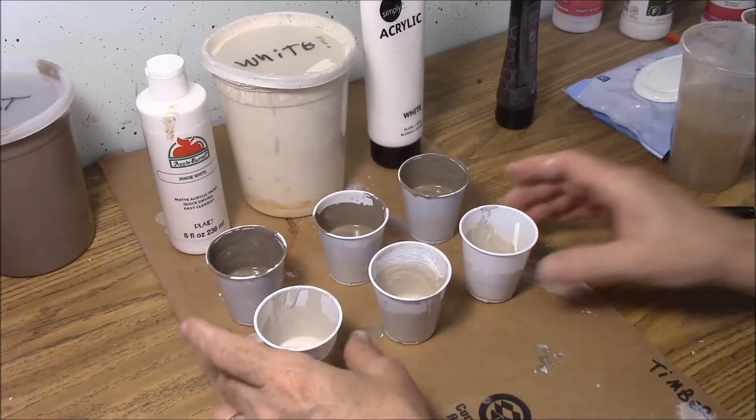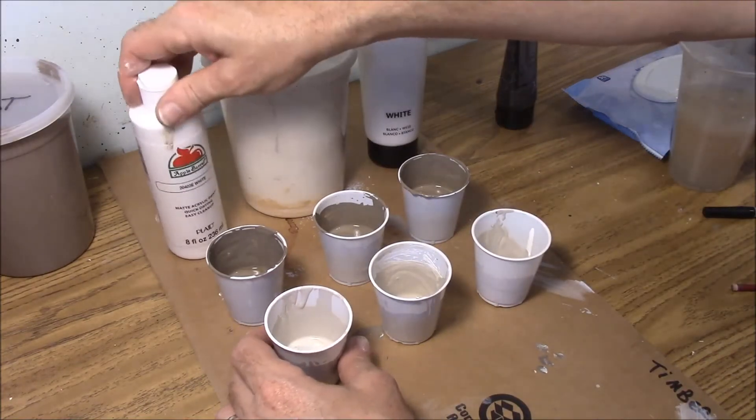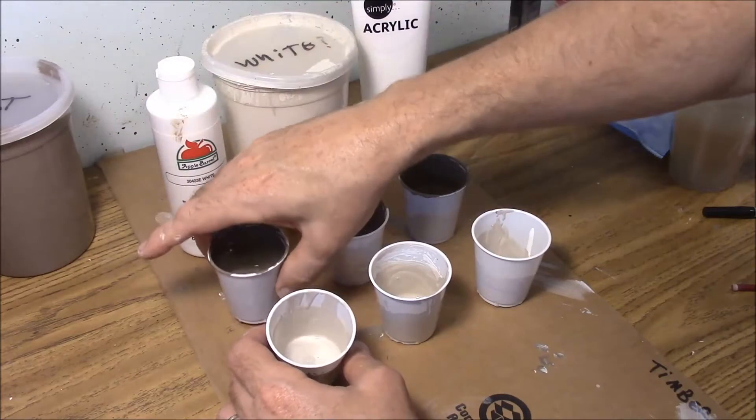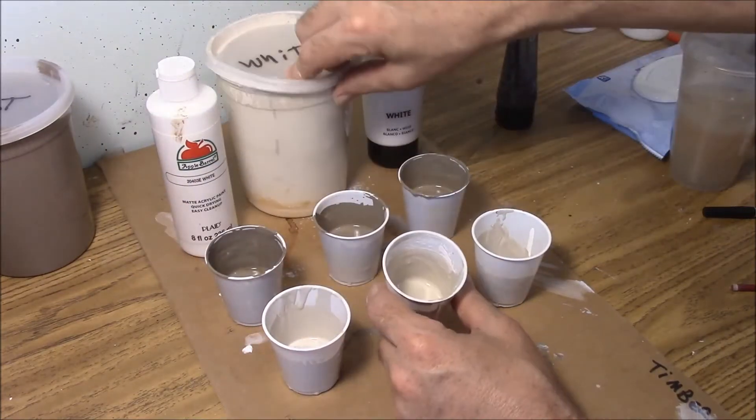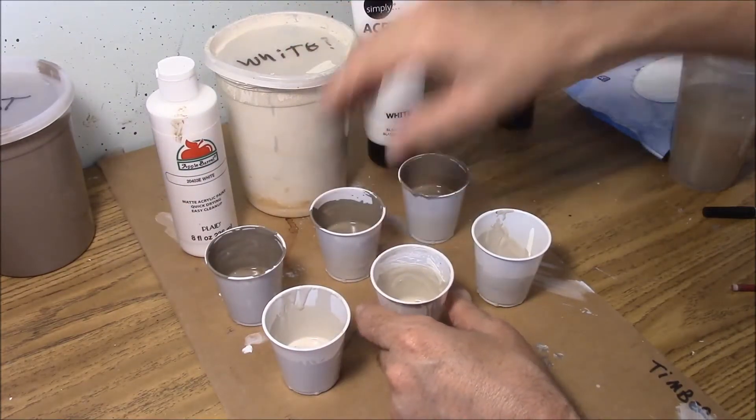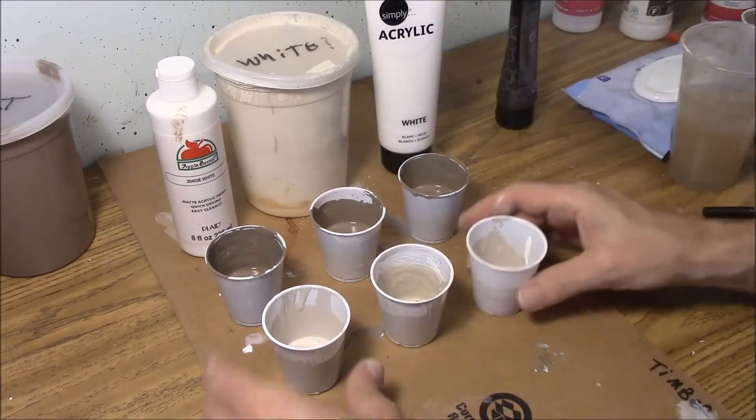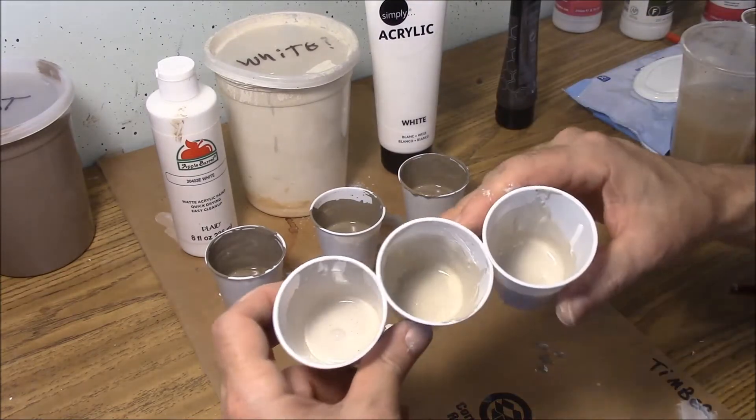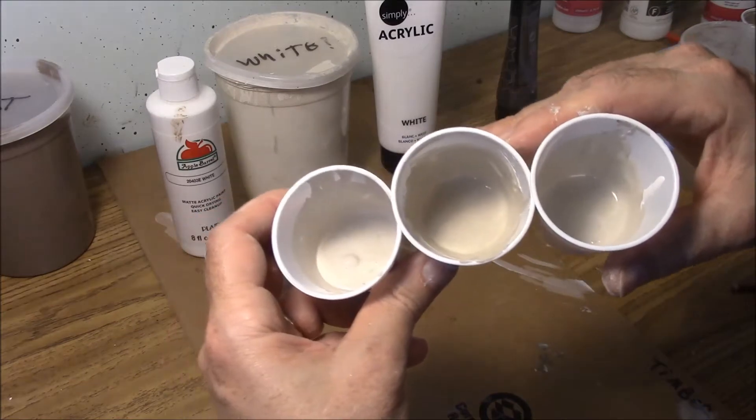Now here's a comparison of the highlight colors from each. On this one we added three parts of white to one part dirt, this one we added two and a half parts of white to one part dirt, and this one we added two parts white to one part dirt. You can see that these are pretty much spot on the same colors.